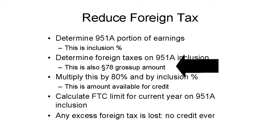The shareholders' income is increased by a higher amount under Section 78. The increase is determined without regard to the 20% reduction in tax under that 80% rule.